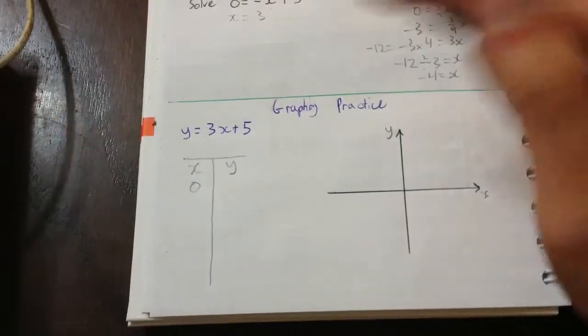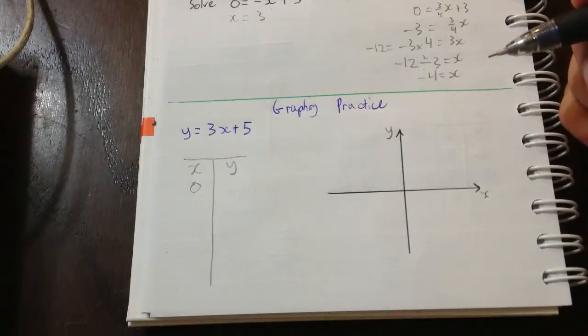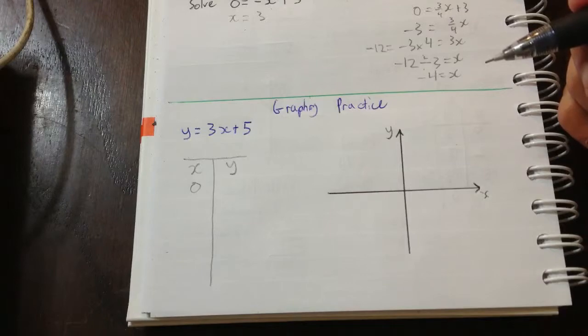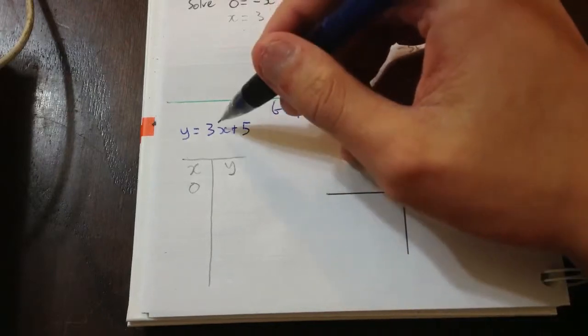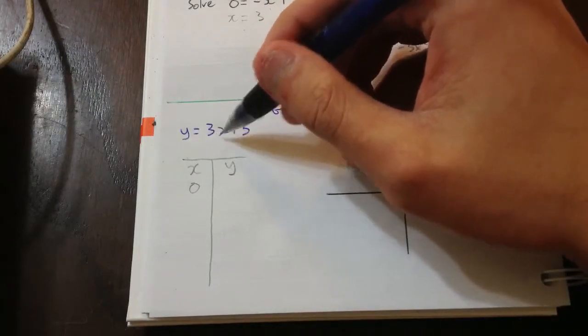So if x equals 0, what does y equal? Yep, 5. Because we get 3 times 0, or 0, plus 5.